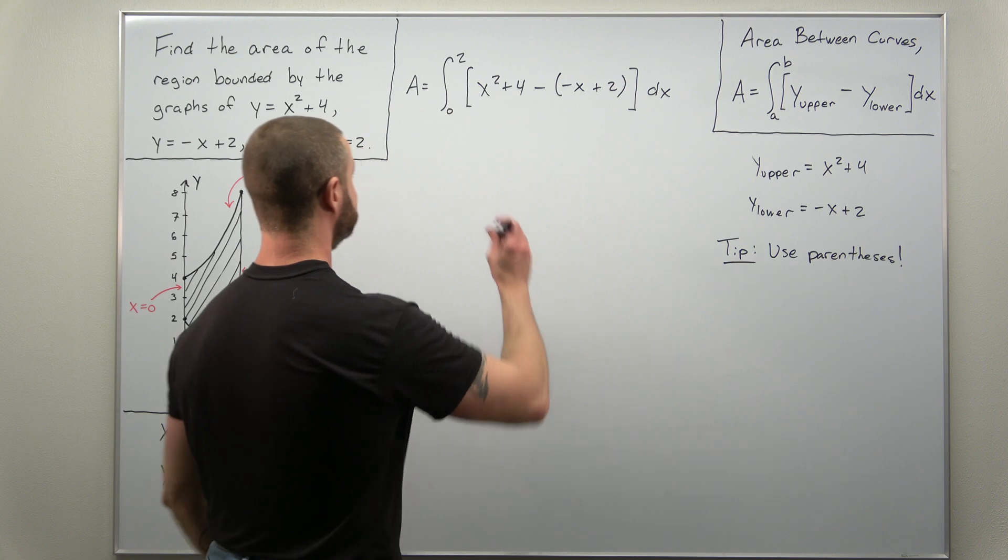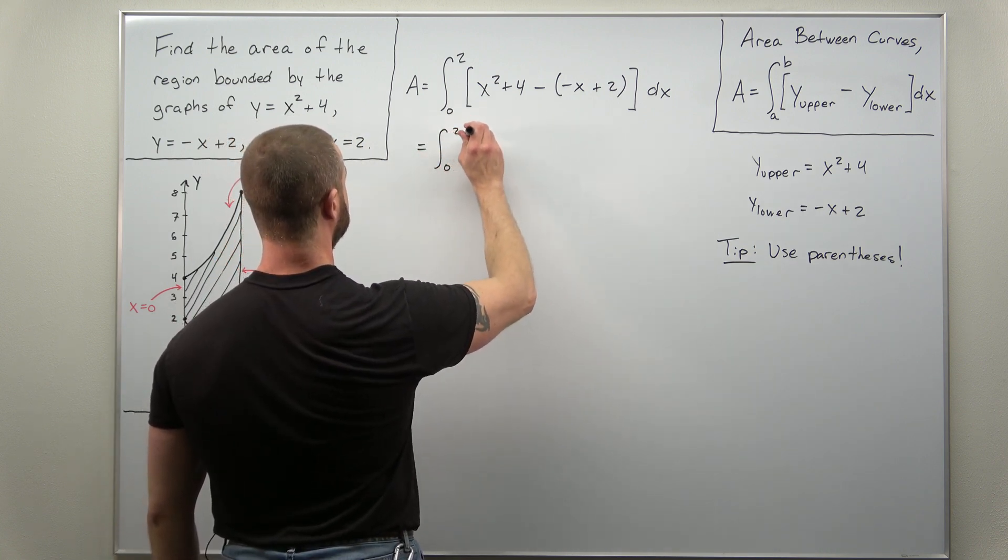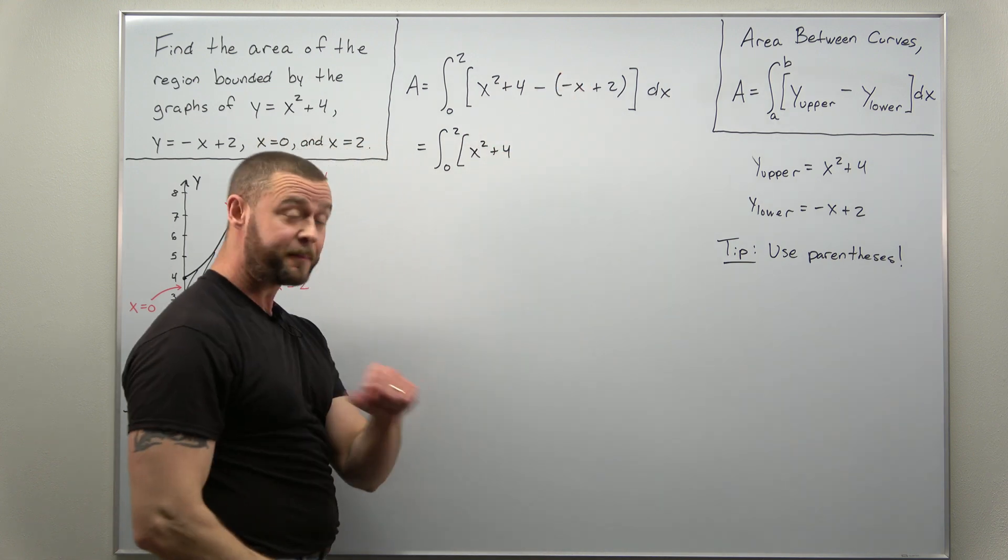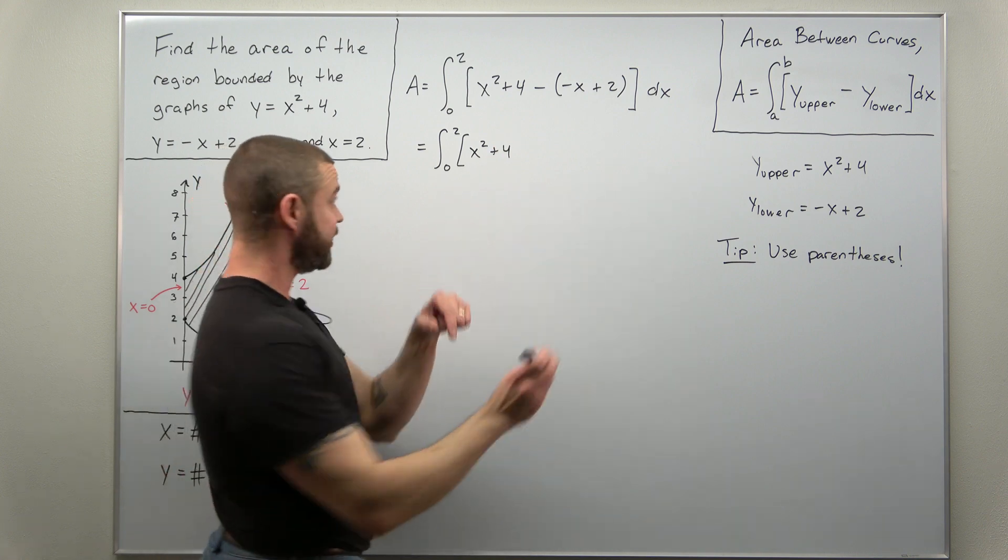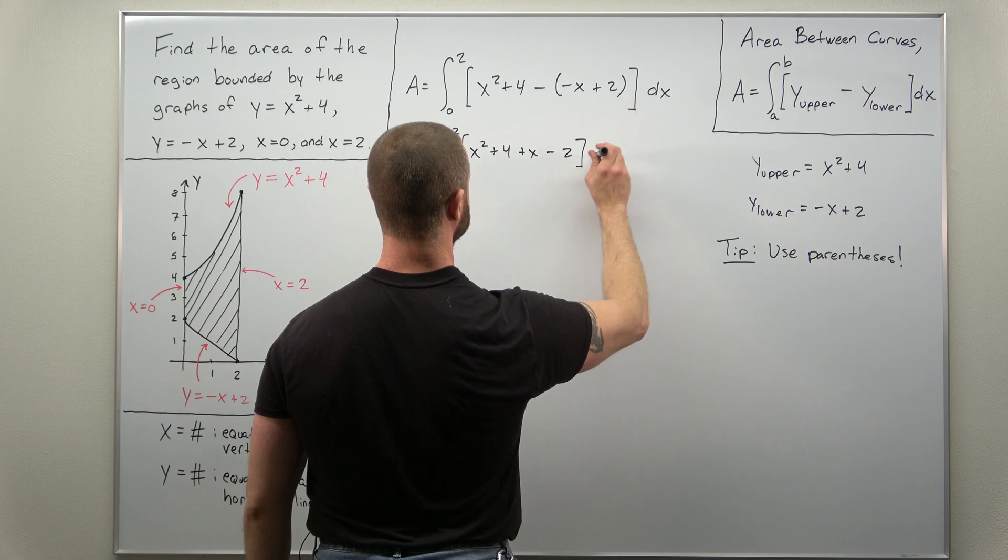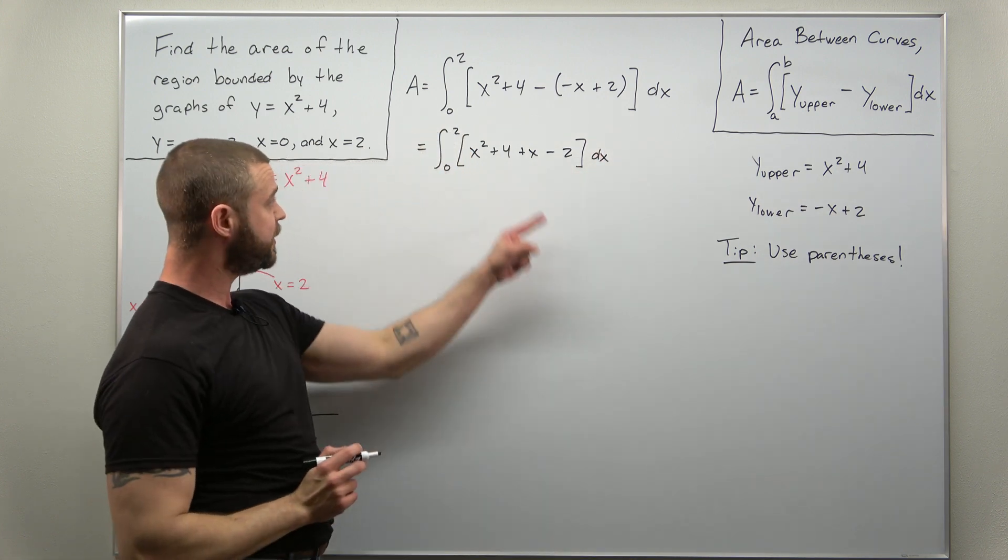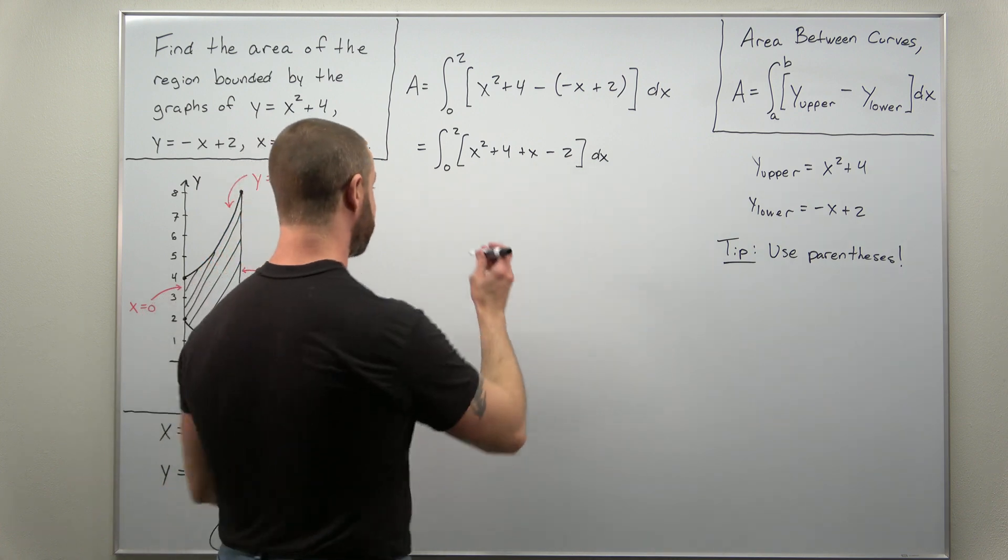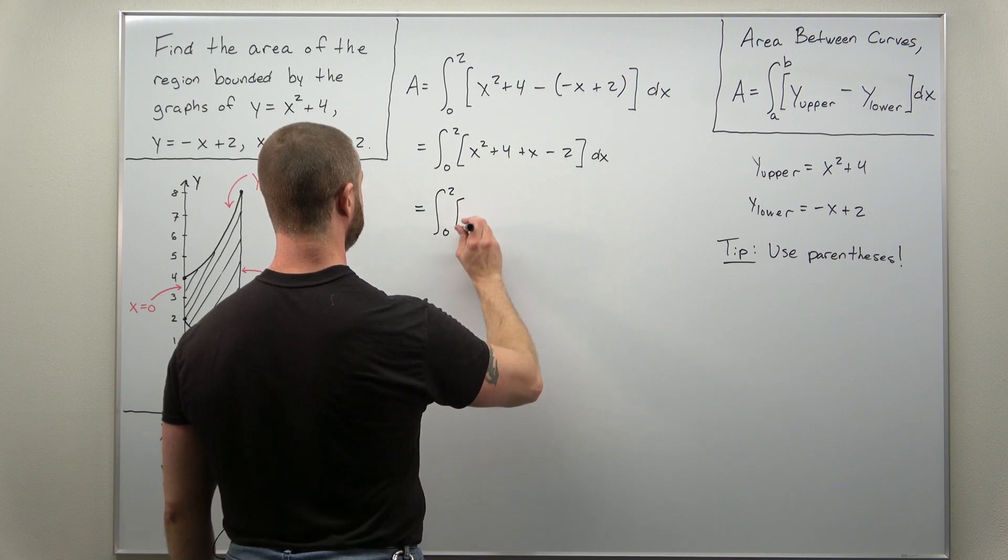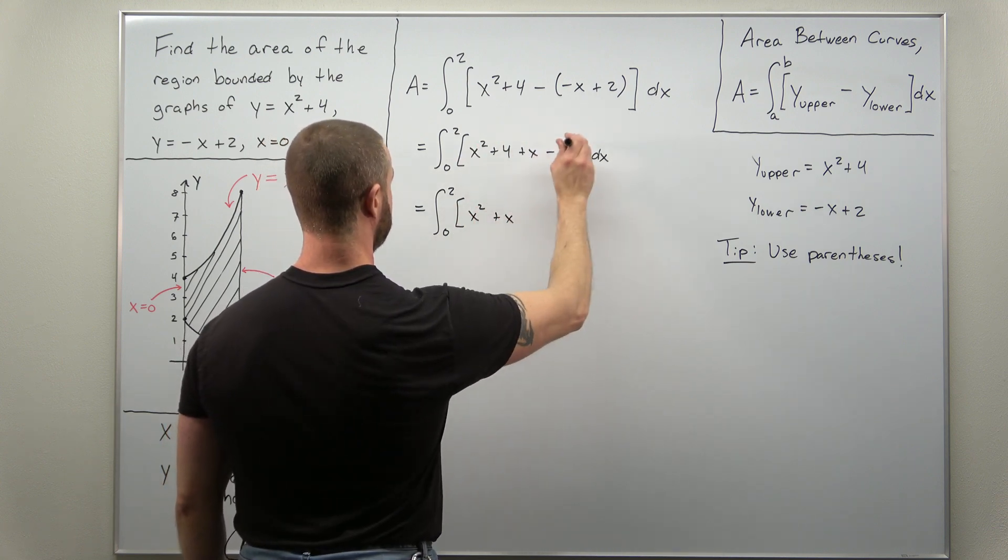All right so let's simplify this inside. Our integral goes from 0 to 2 still. We have x squared plus 4. I'm just going to write this step out. Distribute that negative, that'll change it to 2 plus x but now minus 2. All right and you can simplify this a little bit. 4 and negative 2 you can combine together and you get a really simple integral, the integral from 0 to 2 of x squared plus x plus 2.